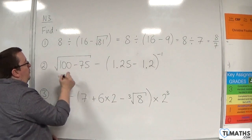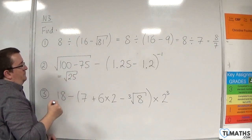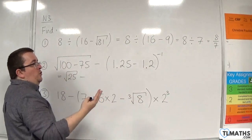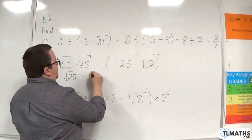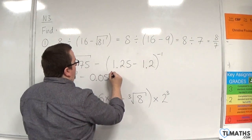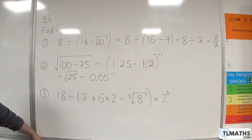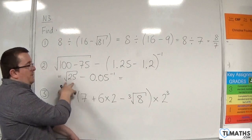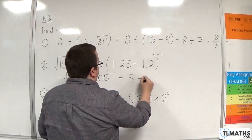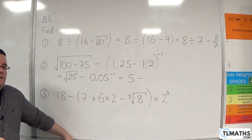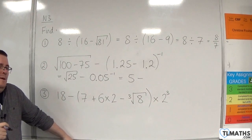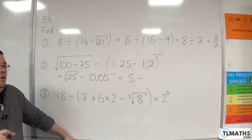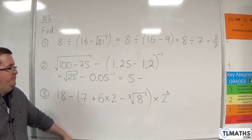Let's deal with that. 100 take away 75 is 25, so we've got the square root of 25, take away, then we've got 1.25 take away 1.2, which is 0.05, and that's to the minus 1. Now, the square root of 25 is 5. Now, we've got this reciprocal here, 0.05 to the minus 1. Not immediately obvious as to what that is. It would be better if I knew what 0.05 was as a fraction.